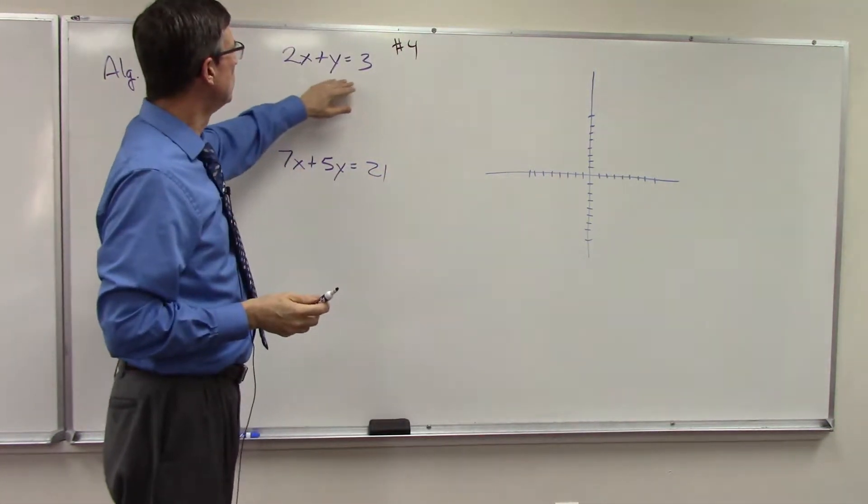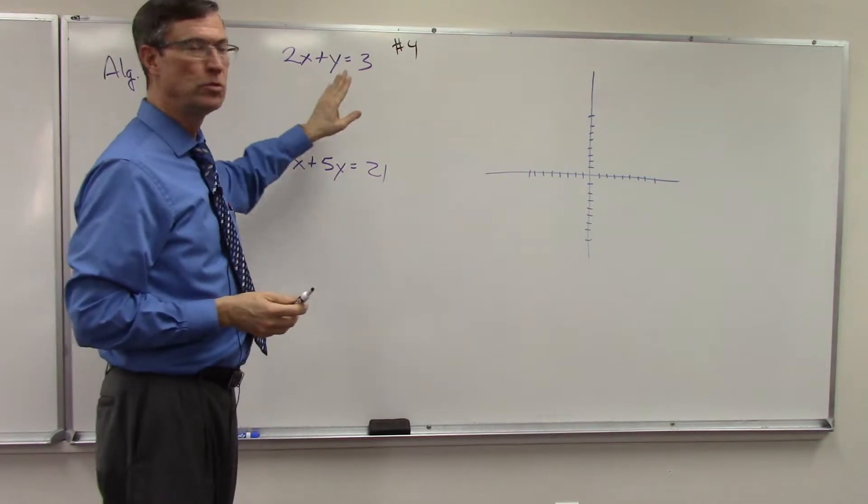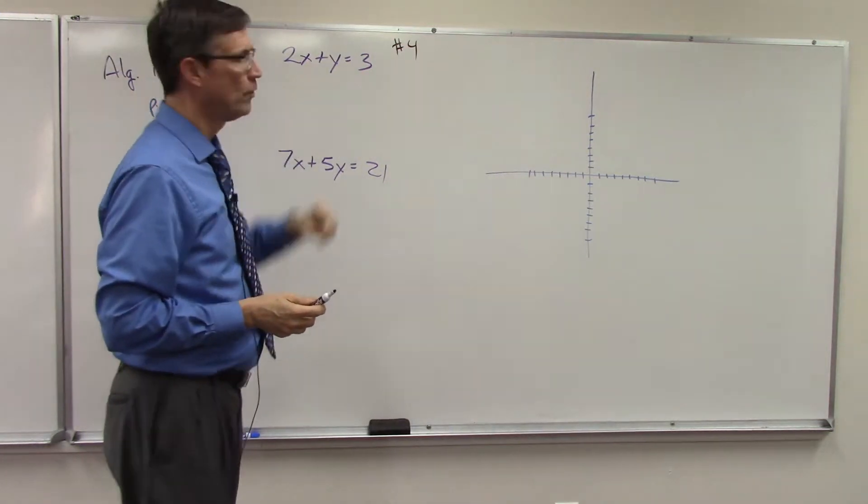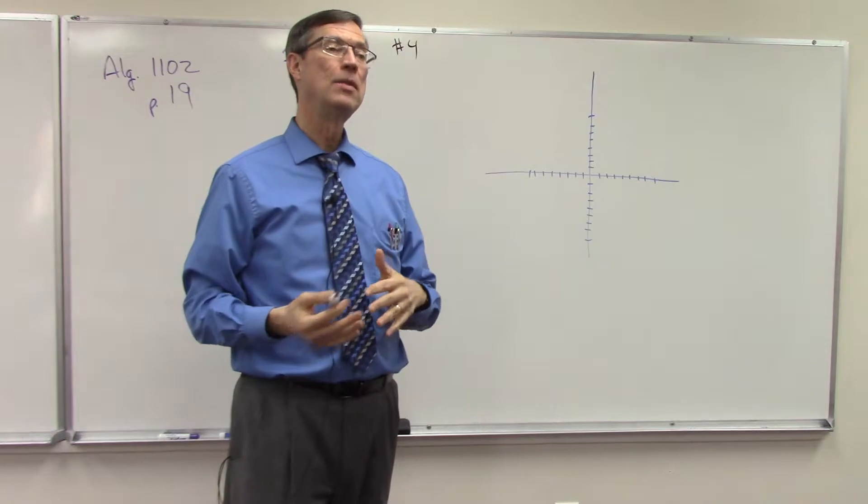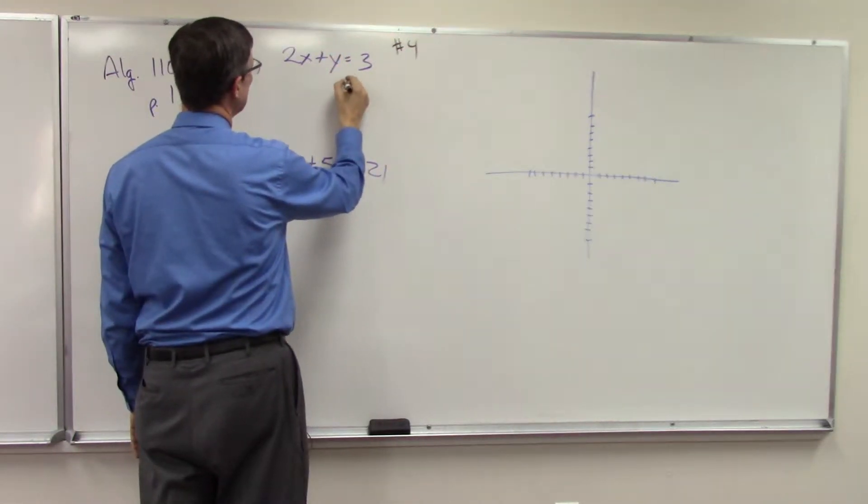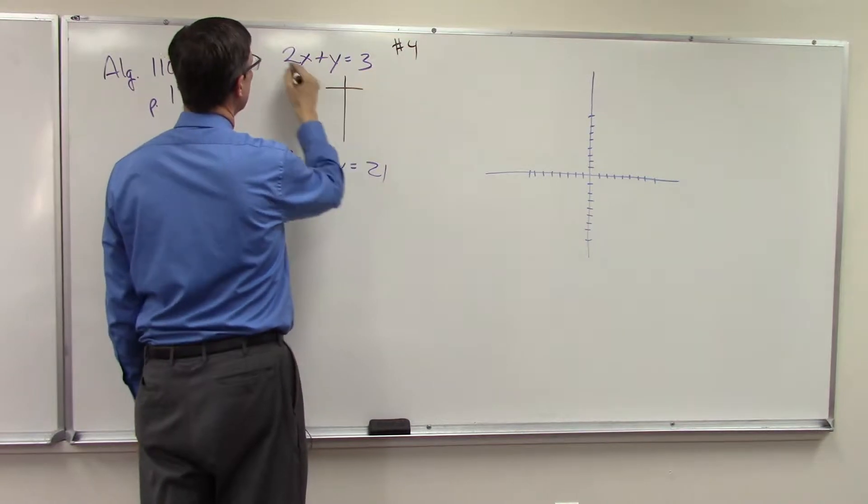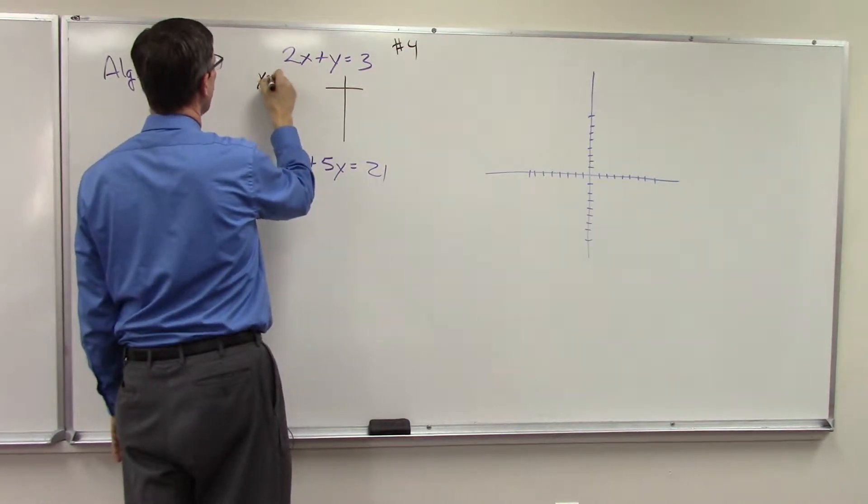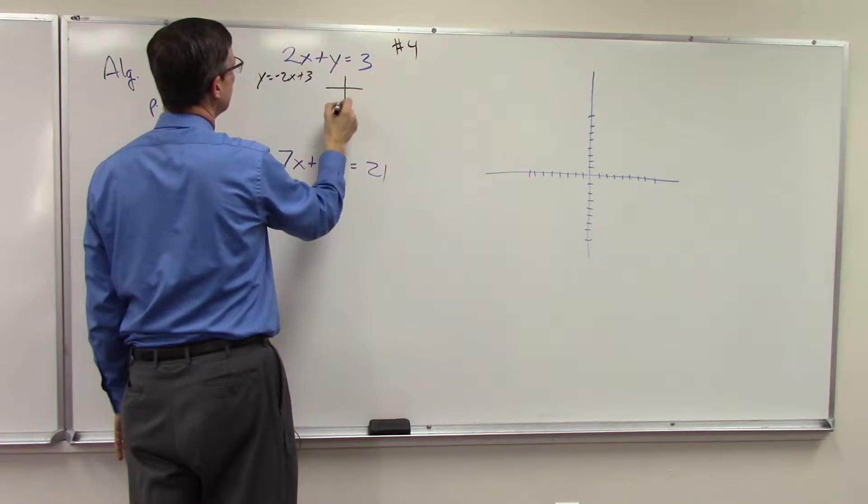What we're supposed to do is come up with three values for x, and then you solve to find the corresponding y values. Then you need to graph three points. So this one is actually kind of easy because we can solve for y and have y equals negative 2x plus 3.